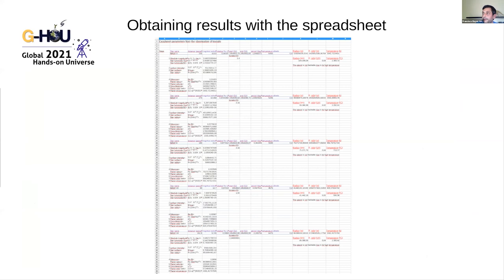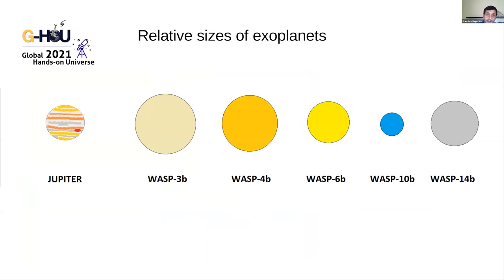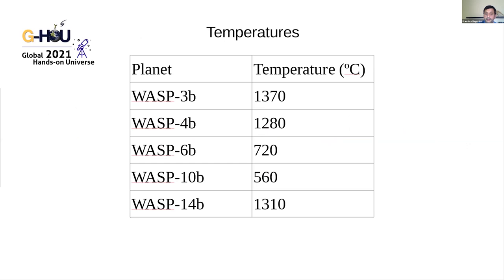In WASP-4b we can see the results. The relative sizes of all planets studied are very large — WASP-3 is among the biggest. The temperatures range between 560 degrees and 1,370 degrees. They are all very high — far too high for habitability.